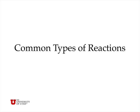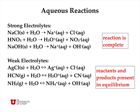Now let's talk about common types of reactions. In aqueous reactions, or reactions that occur in water, we have strong electrolytes. Sodium salts like sodium chloride and sodium hydroxide are strong electrolytes — they dissolve as ions in aqueous solution almost completely with no solid left. Things that contain nitrate ions, like nitric acid, also dissolve completely in water, so nitric acid is a very strong acid.